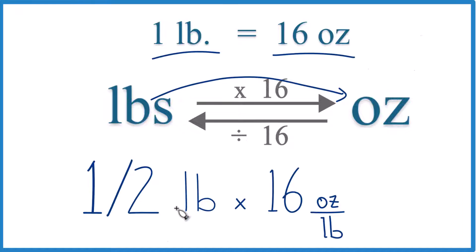So when we multiply now, pounds cancel out. We're left with ounces. That's what we're looking for. And one half of 16, one half times 16, that's our eight ounces again.